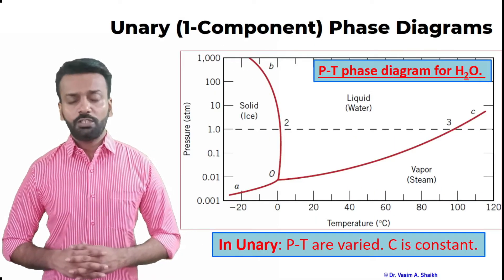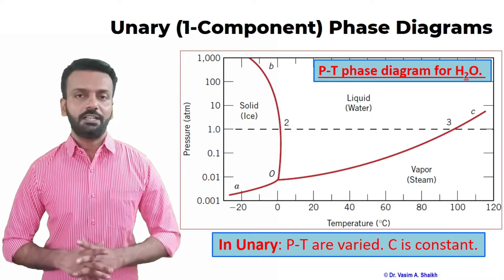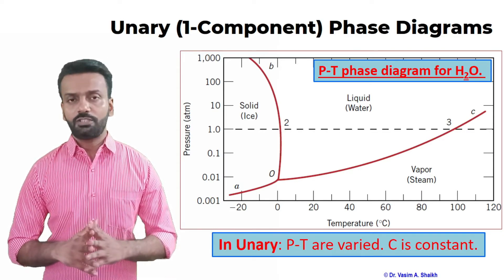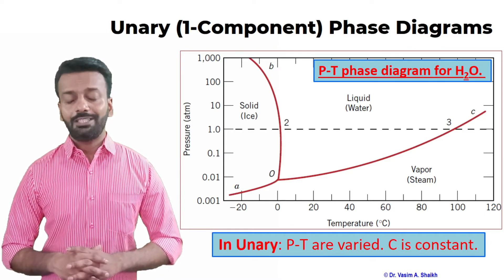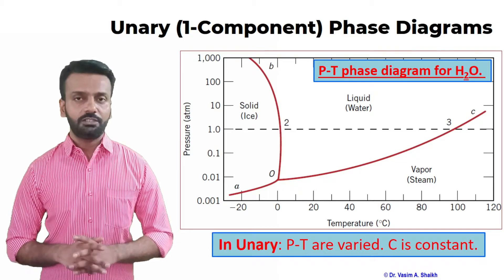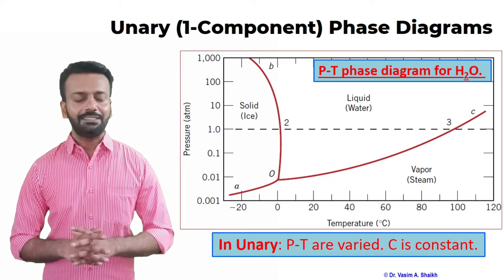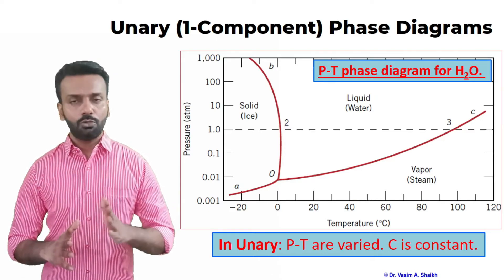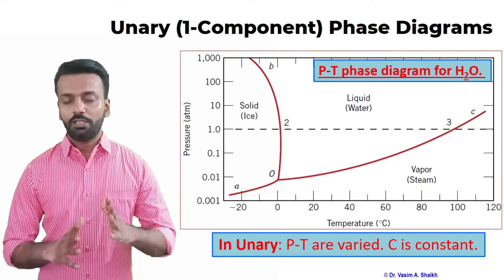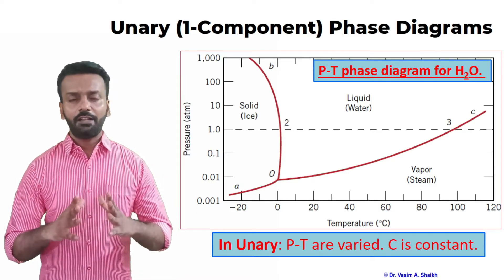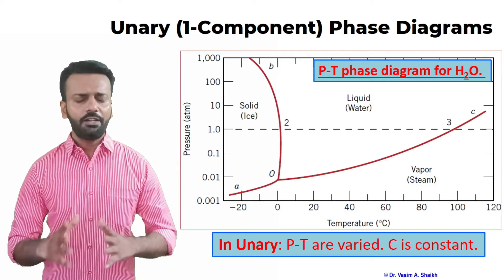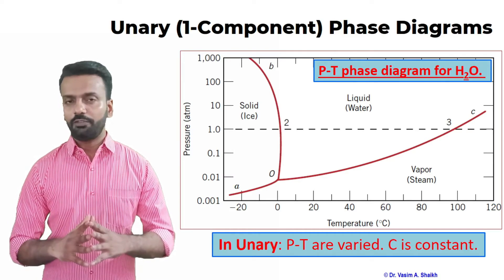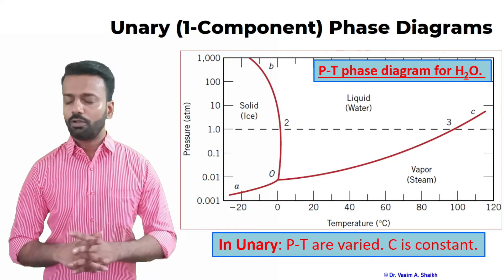Let us take an example of a unary phase diagram. This is a phase diagram of water, where pressure and temperature are varied and composition is held constant. Temperature is on the x-axis and pressure is on the y-axis. As you increase temperature, the liquid phase turns into vapor phase, and as you decrease temperature, the freezing point is reached and liquid turns into solid. All three phases — solid, liquid, and vapor — are present in this phase diagram.